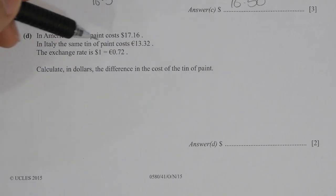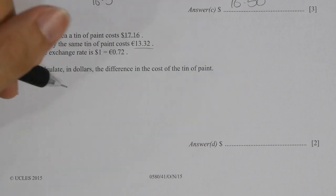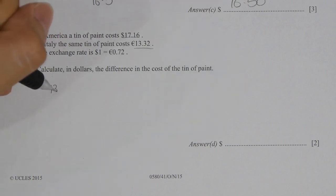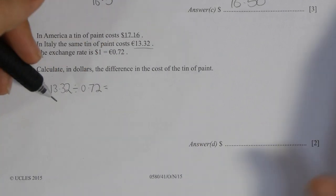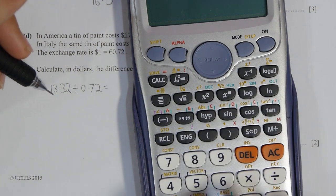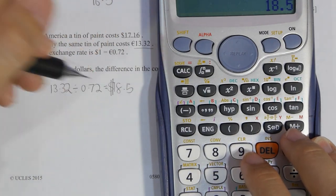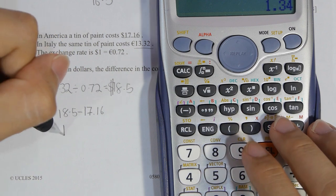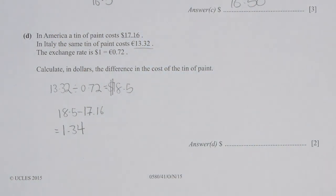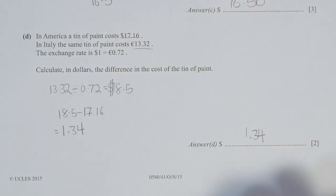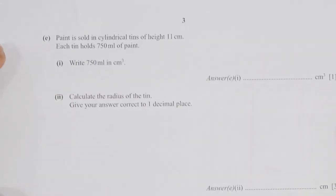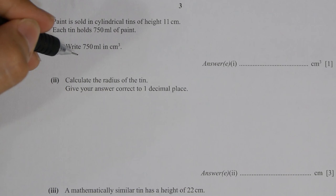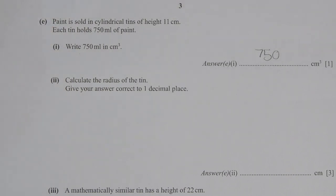So find the difference in the cost of paint. I took 13.32 divided by 0.7, then I get a result of 18.50. So take 18.50 minus 17.16, then you get the difference as 1.34.